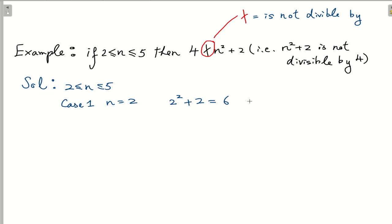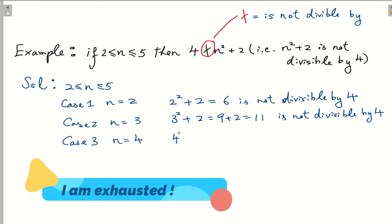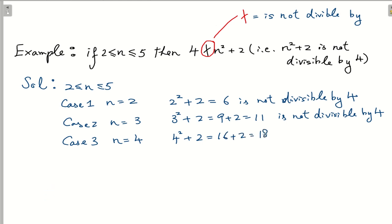6 is not divisible by 4. Case 2: n = 3. Then 3² + 2 = 9 + 2 = 11, and 11 is not divisible by 4. Case 3: n = 4. Substituting gives 4² + 2 = 16 + 2 = 18, and 18 is not divisible by 4. Case 4: n = 5. We get 5² + 2 = 25 + 2 = 27.